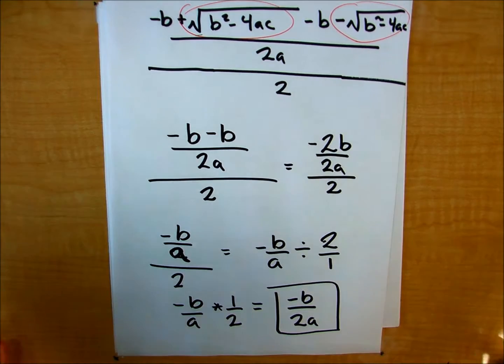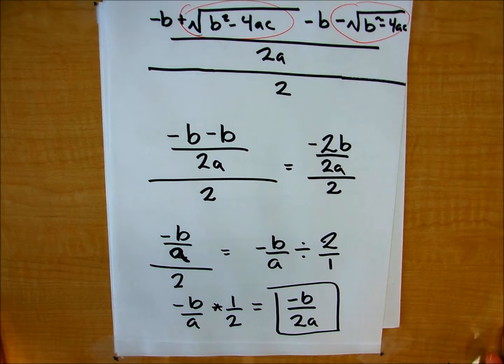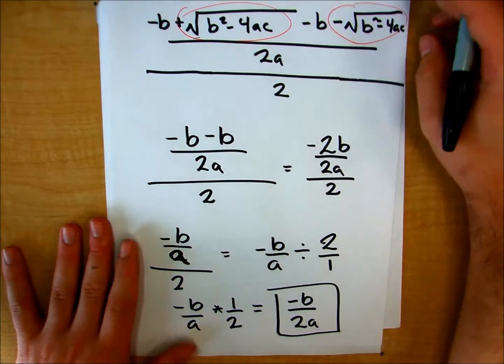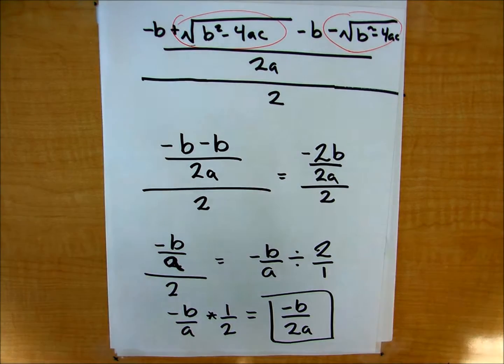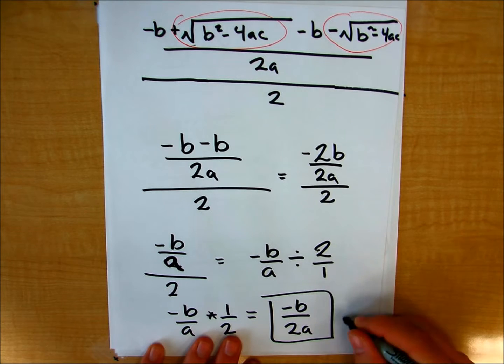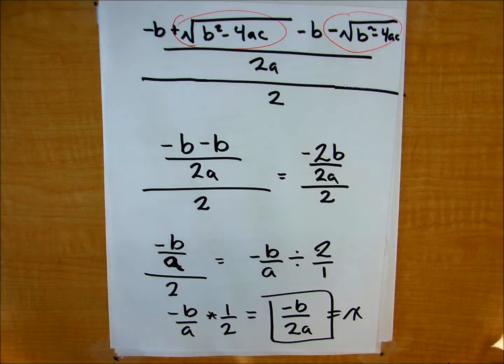So all I did was just simplify my quadratic formula within my midpoint formula. And I got this axis of symmetry, negative b over 2a.